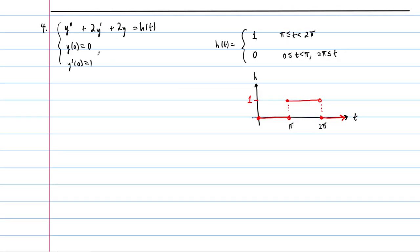To use the Laplace transform method, we first write h of t in terms of u sub c functions. Looking at the graph, h of t equals u sub pi of t minus u sub 2 pi of t. It starts at zero, steps up by 1 at pi, and steps back down at 2 pi.